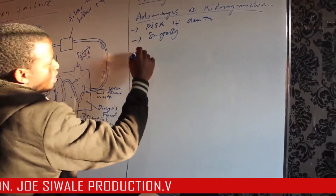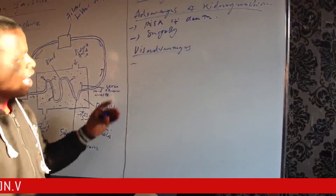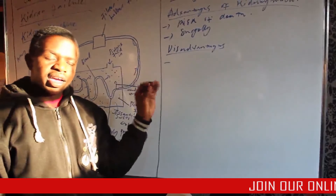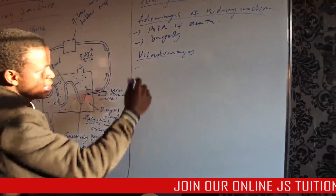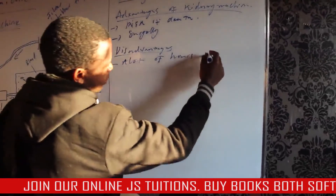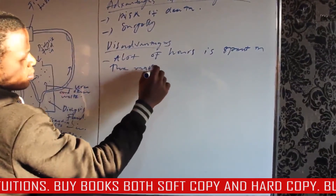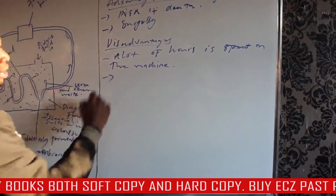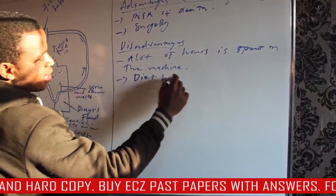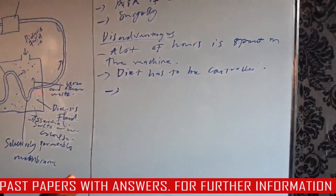The disadvantages of the kidney machine include: the patient spends a lot of hours on the machine — about eight hours a week. The diet also has to be controlled. Additionally, the machine is expensive.